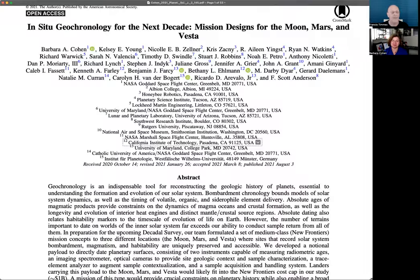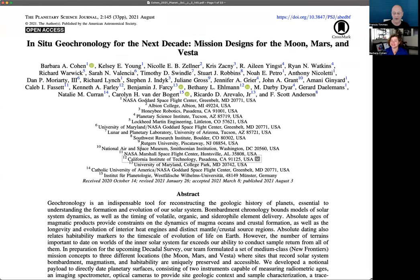And that is going to bring us to this super awesome Planetary Science Journal article. It's open access, people. You can go get it. In-situ geochronology for the next decade: mission designs for the moon, Mars, and Vesta. And Barbara, take us away. This is the culmination of a lot of work that we did. You can tell by how long the paper is. We had a team of people, an amazing team of scientists and engineers who came together for a little more than a year.